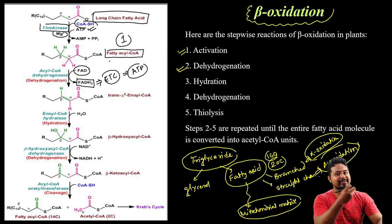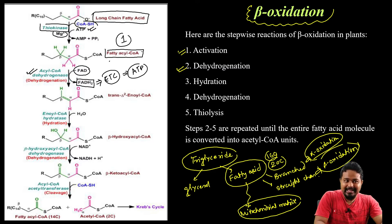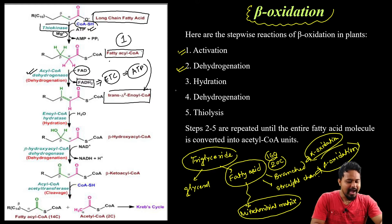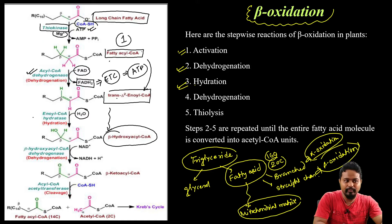After FADH₂ — the enzyme involved is acyl-CoA dehydrogenase. Fatty acyl-CoA is converted into trans-enoyl-CoA in step 2. The next step is hydration — water is added to trans-enoyl-CoA to convert it into beta-hydroxyacyl-CoA. The enzyme that helps is enoyl-CoA hydratase.